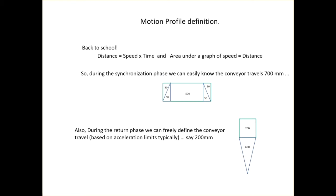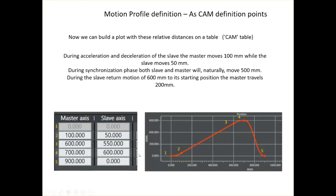On this slide I'm trying to illustrate how using simple geometry and motion equations we can quickly build the important figures which we will need to create a table of points — to define the positional relationship between the master conveyor axis and the X-axis slave. Finally, we're able to derive using those numbers a lookup table for master and slave, and we use the Sysmac software tool to input those values and create a CAM profile.